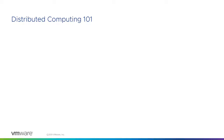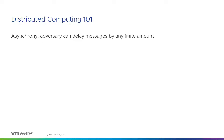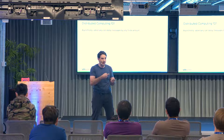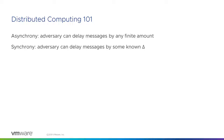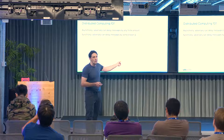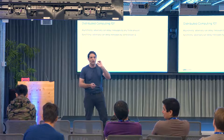In distributed computing, there are three main models of how we assume networking looks. The first is asynchronous communication, where we assume the adversary can control and delay every message by an arbitrary amount — the worst-case assumption. The next model is synchrony, where every message has some bounded delay Delta — for example, less than half a second when connecting to a node on the internet.